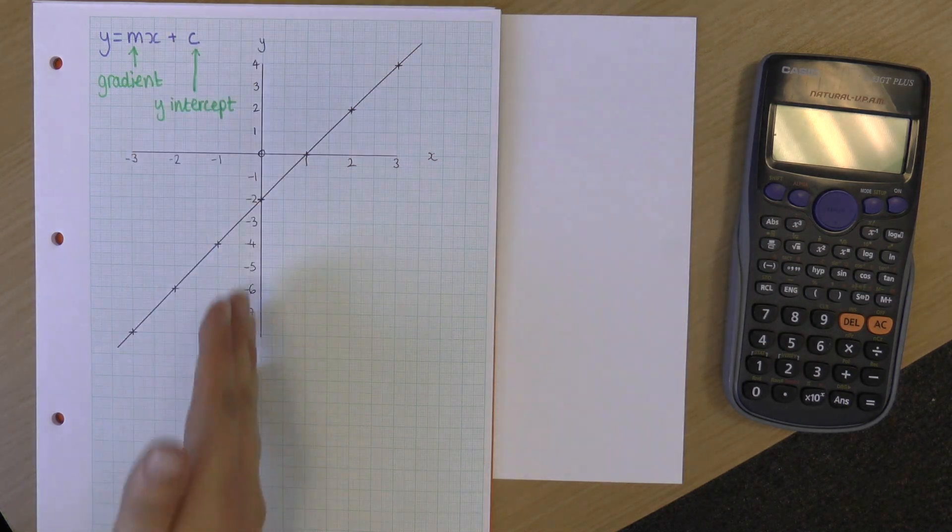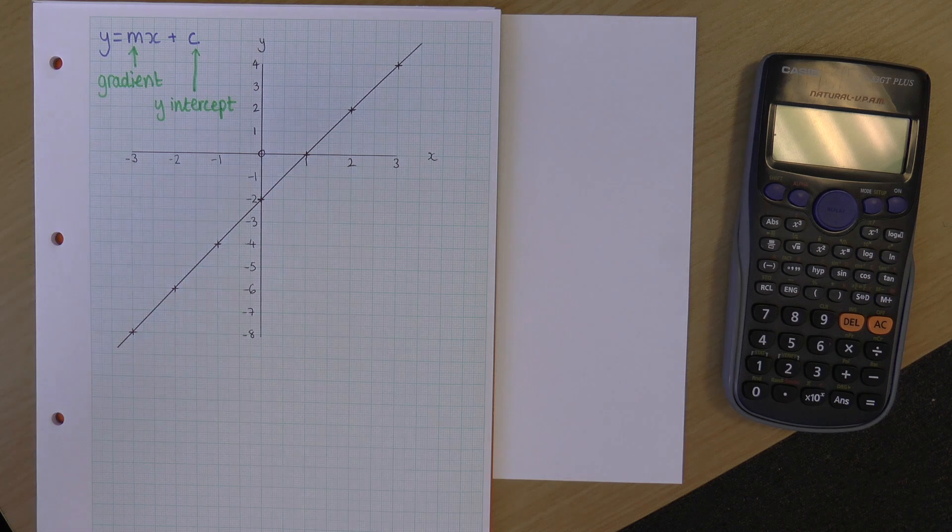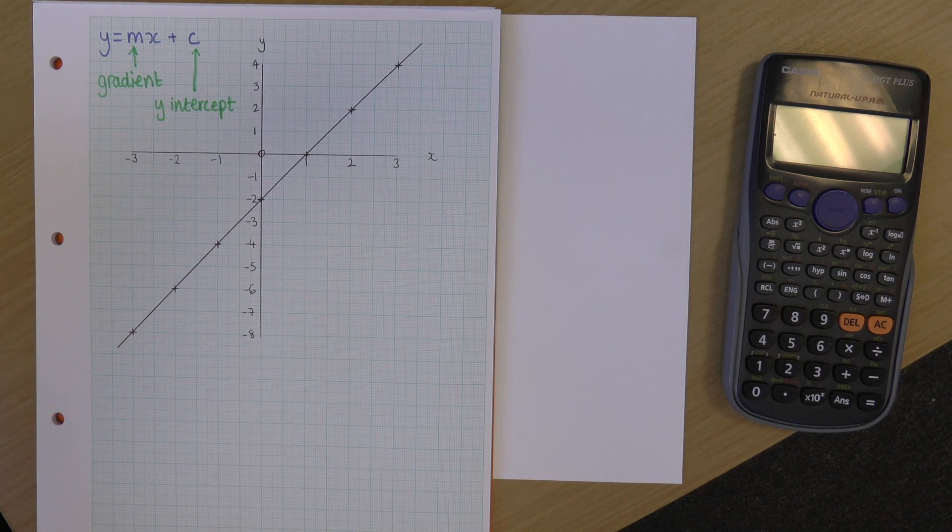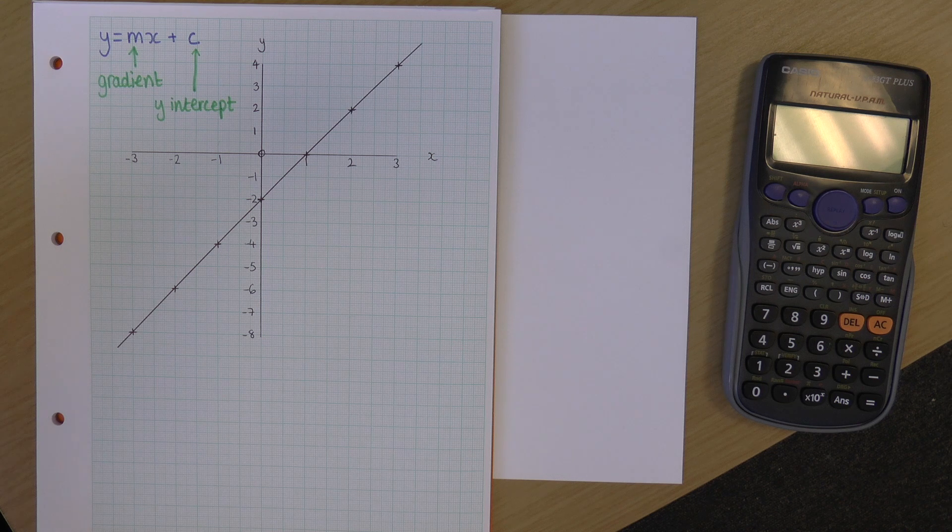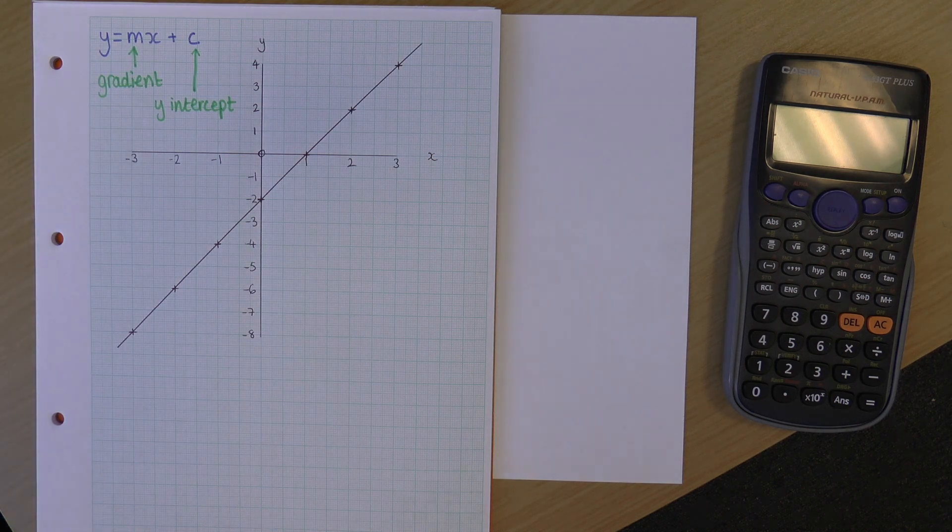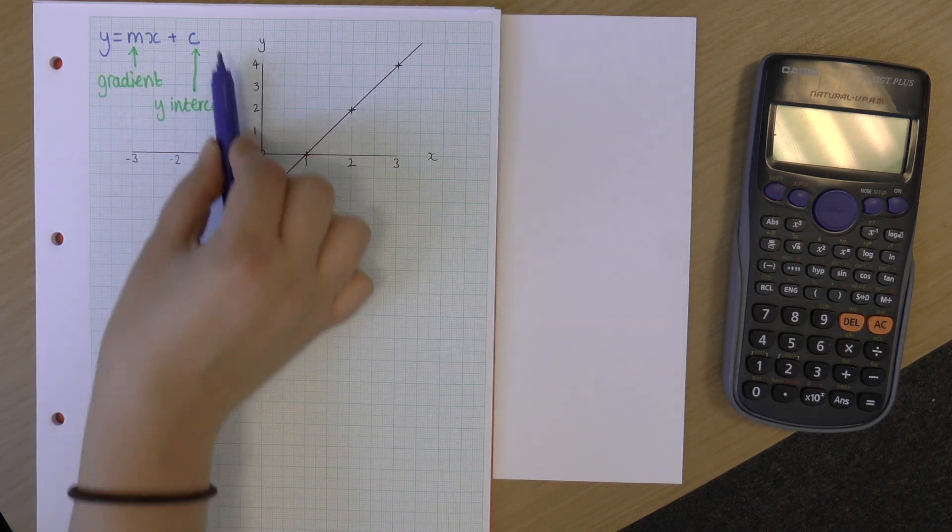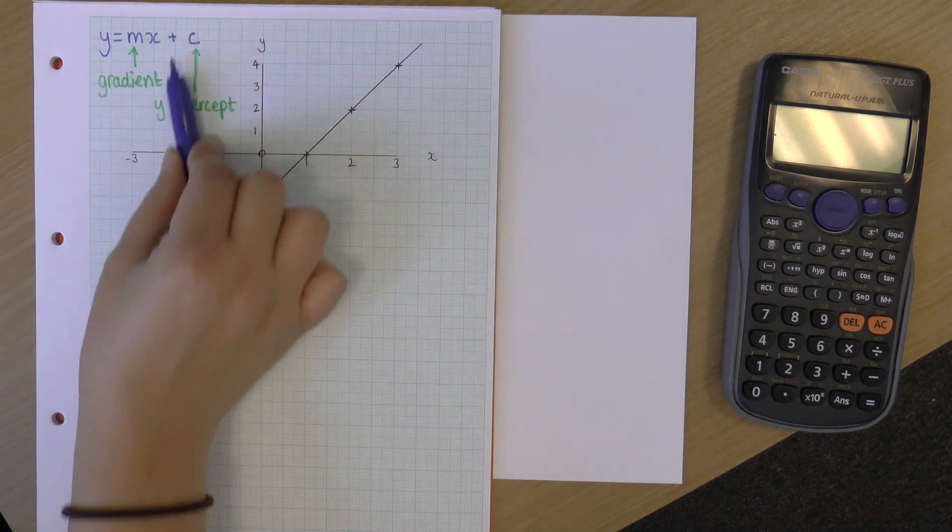And that just means where our line crosses the y-axis. Now remember, this is our y-axis, so we are finding where the line crosses that. So, let's start looking. If I've got y equals mx plus c, I find it easiest to start off with finding out what the y-intercept is.